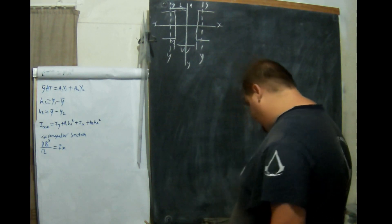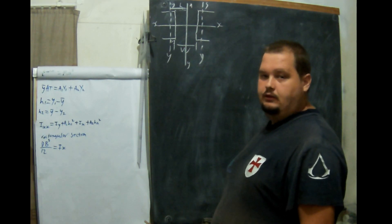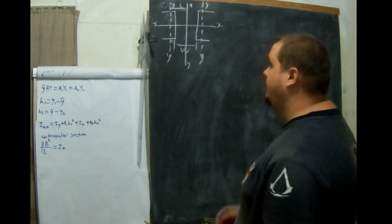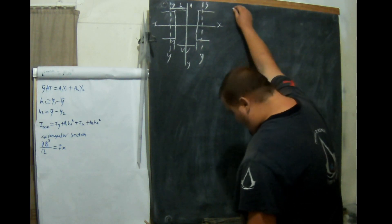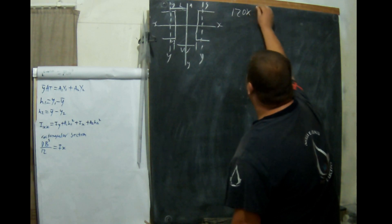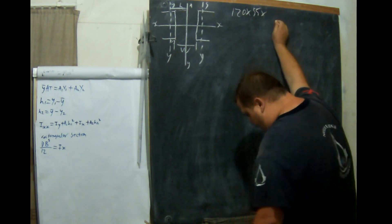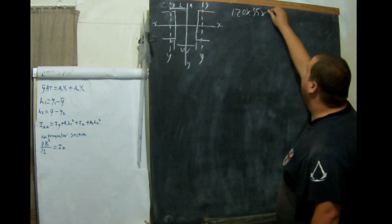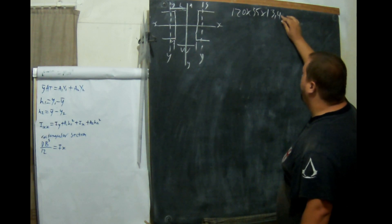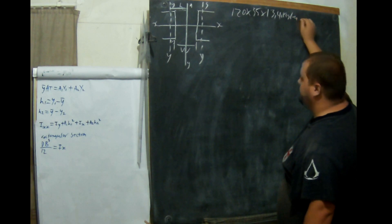So now both beams — what we're going to do is look at our table and find these two beams. Both beams are exactly the same, so it's 120 by 55 by 13.4 kg per metre.